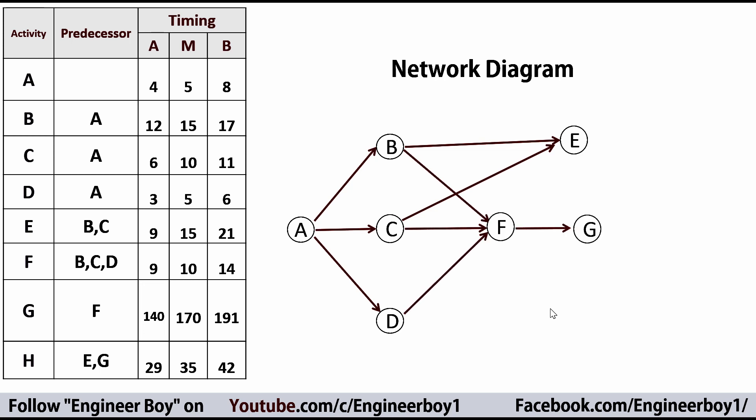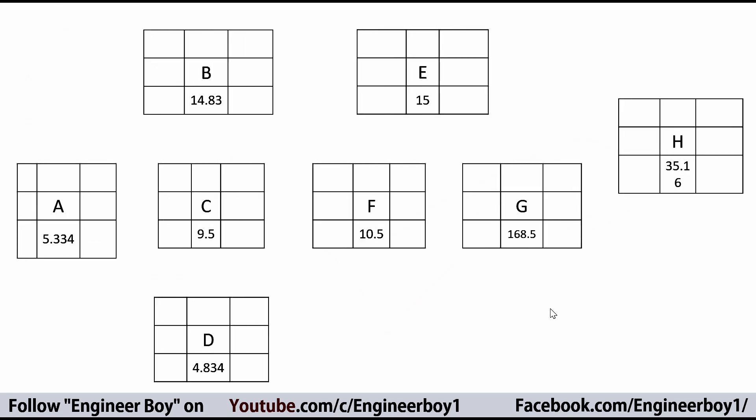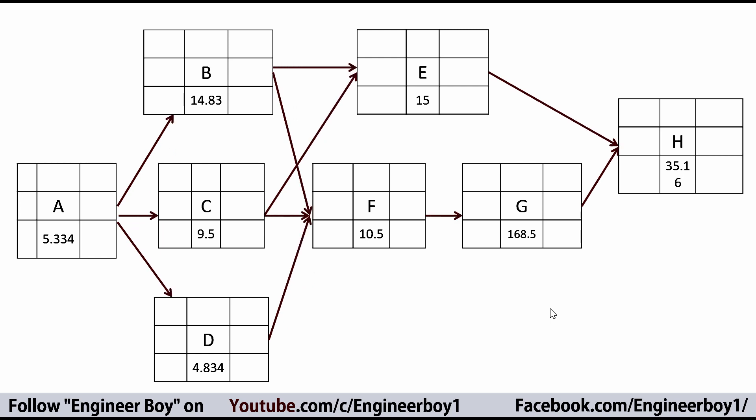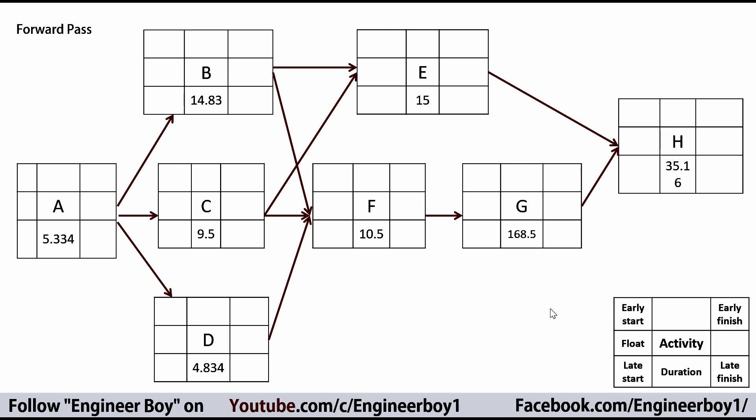F is the predecessor for G, and then E and G are predecessors for H — H is the finish activity of the project. This is a simple diagram which can also be represented in another form; it is the same network diagram, just given a format and annotation for the forward pass and backward pass.